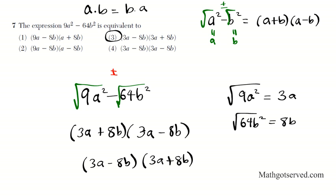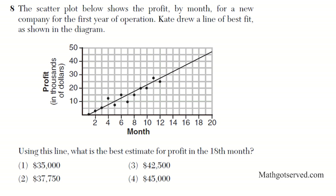We're going to move along to question 8. The scatter plot below shows the profit by month for a new company for the first year of operation. Kate drew a line of best fit as shown in the diagram. Given the line, what is the best estimate for profit in the 18th month?